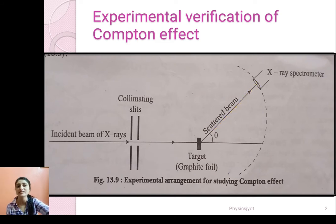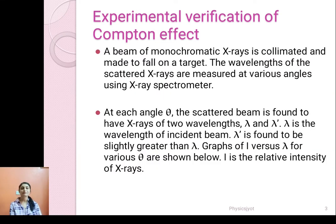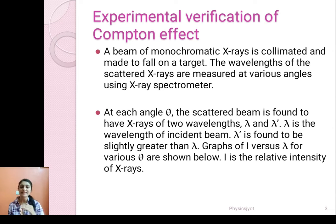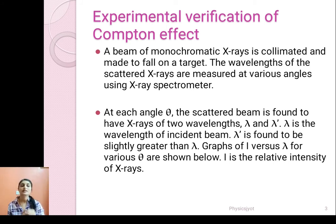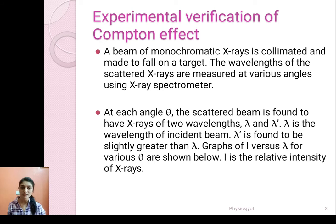The x-ray beam gets scattered and it is received by an x-ray spectrometer. A beam of monochromatic x-rays is collimated and made to fall on a target. The wavelengths of the scattered x-rays are measured at various angles using an x-ray spectrometer. At each angle theta, the scattered beam is found to have x-rays of two wavelengths, lambda and lambda dash.